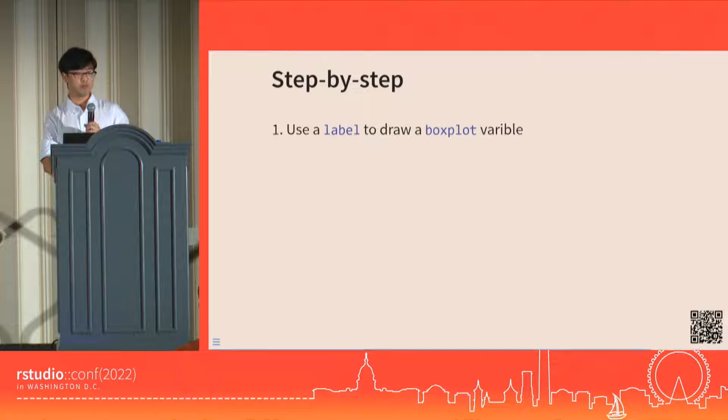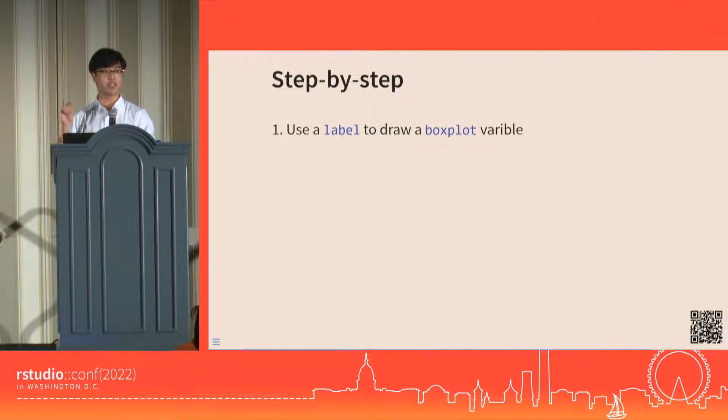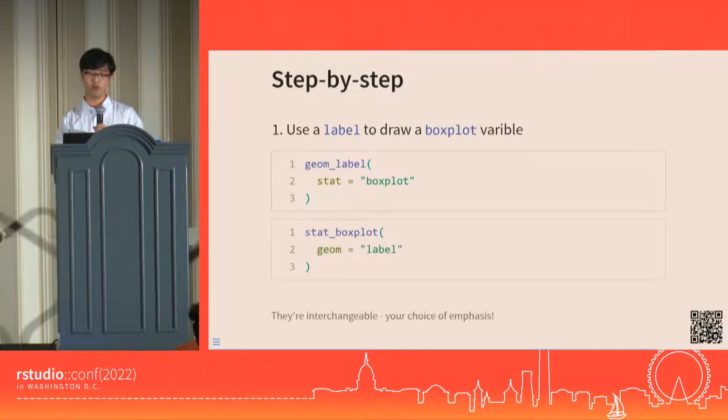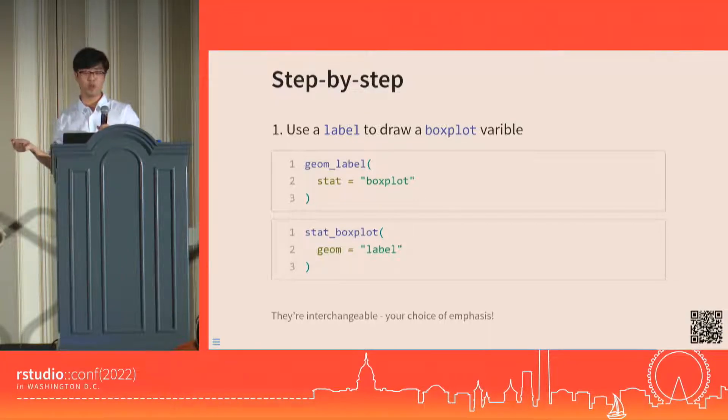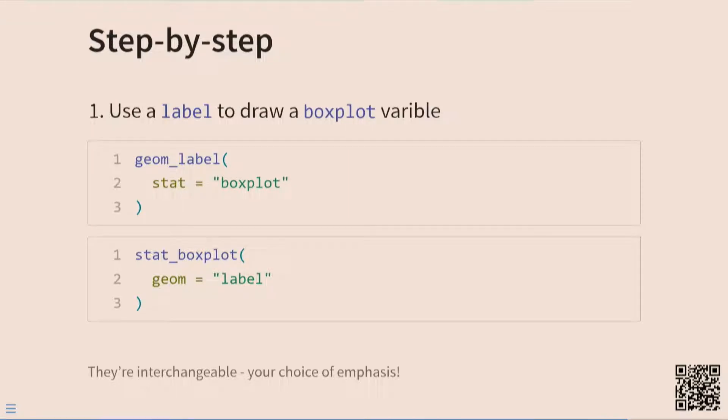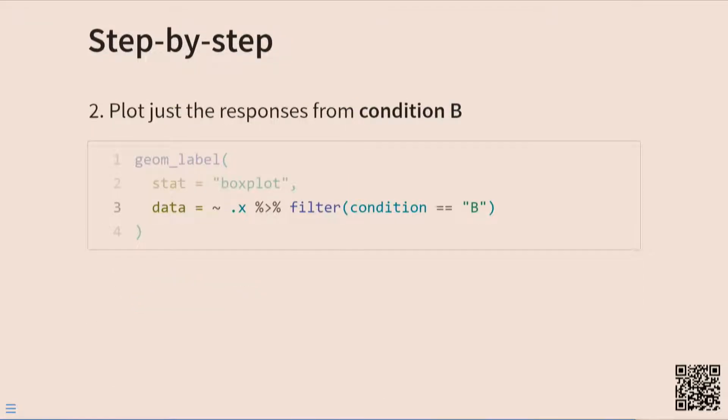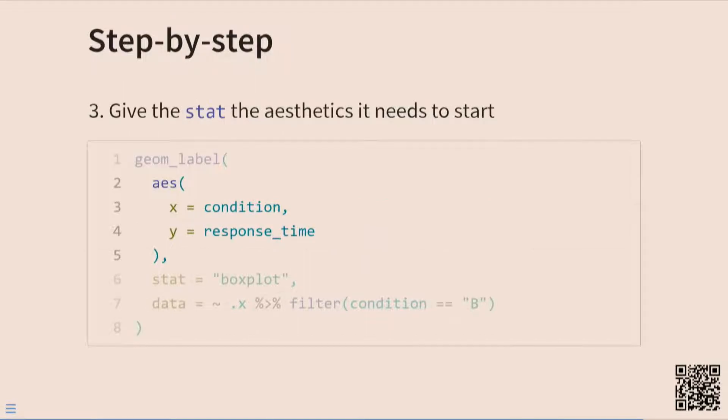First thing we start is a high-level description of what we want. Every layer has a stat and a geom, so maybe let's start there. We want to use a label to draw a boxplot variable. In code, that means geom_label with stat equals boxplot, or stat_boxplot with geom equals label. Every layer needs both, and it's your choice of syntax, they're the same thing. Next, we can specify the data that we want the layer to plot. We only care about the second boxplot, so filter for condition is B, and let that apply.